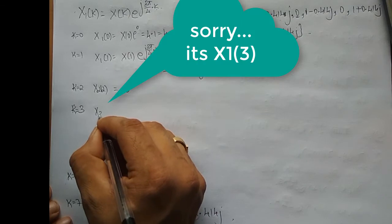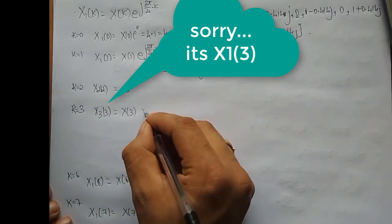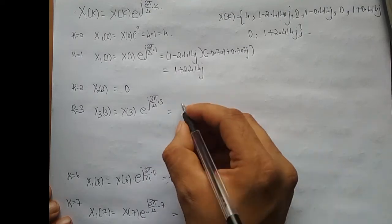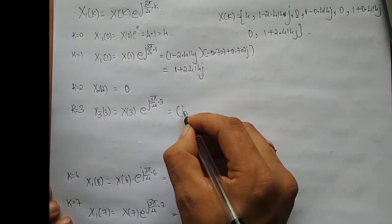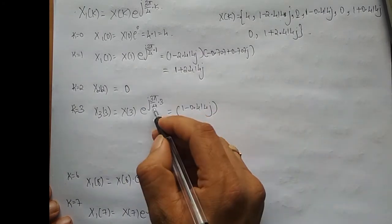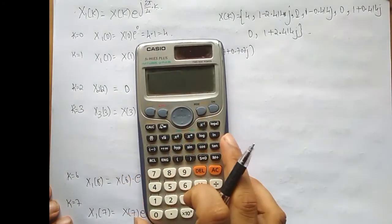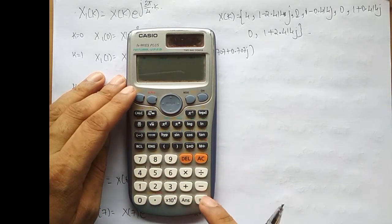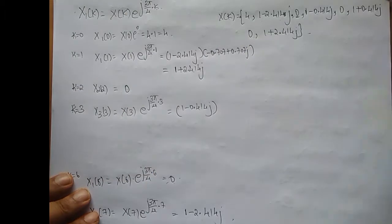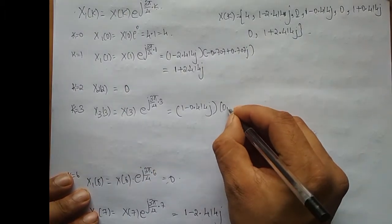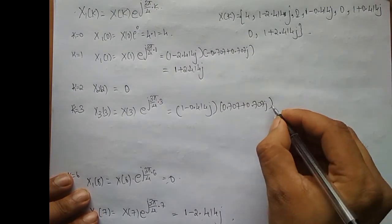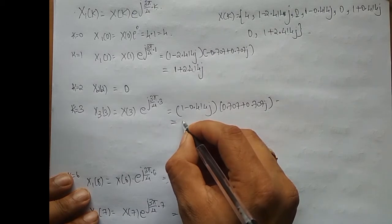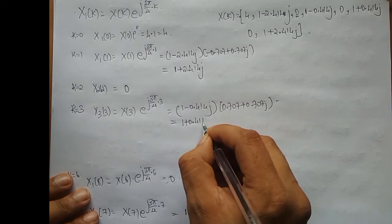For k = 3: X1[3] = X[3] · e^(j3π/4·3) = X[3] · e^(j9π/4). X[3] = 1 - 0.414j. So (1 - 0.414j) · e^(j9π/4). Now e^(j9π/4) = cos(9π/4) + j·sin(9π/4) = 0.707 + 0.707j. If you simplify this, you get 1 + 0.414j.